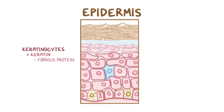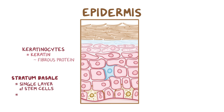Keratinocytes start their life at the deepest layer of the epidermis, called the stratum basale, or basal layer, which is made of a single layer of small cuboidal to low columnar stem cells that continually divide and produce new keratinocytes. These continue to mature as they migrate up through the epidermal layers, flattening out to a pancake-like squamous shape as they ascend.